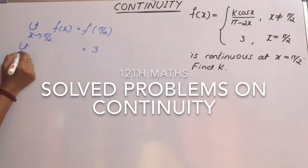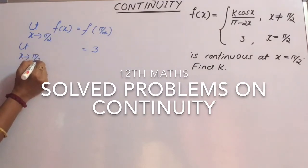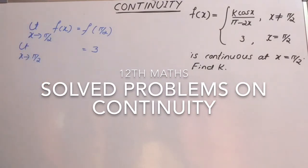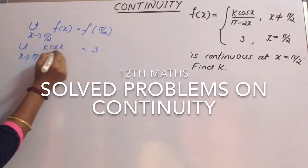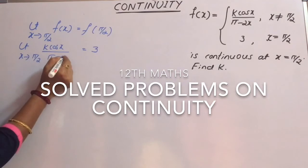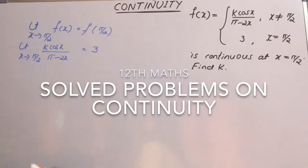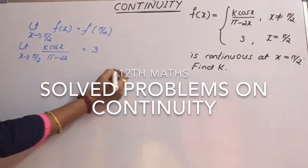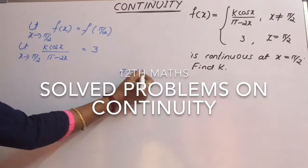On the left-hand side, the limit as x tends to π/2 of f(x) becomes k·cos(x) divided by (π - 2x). Now we have to find the limit of this function. To find the limit, let us use the substitution method.